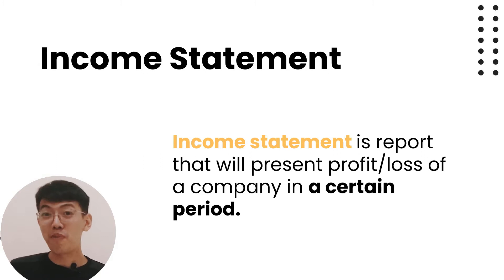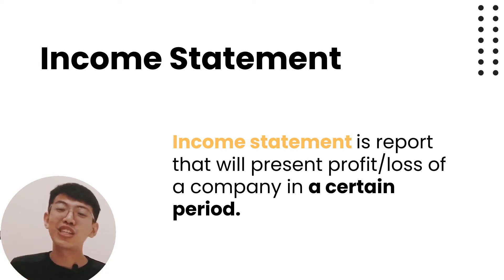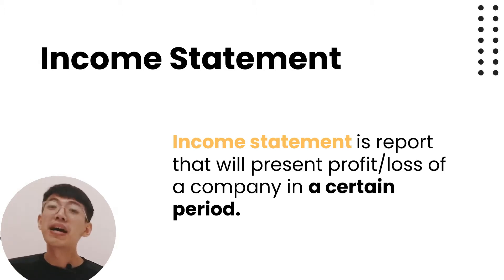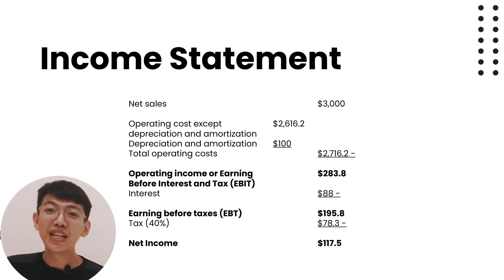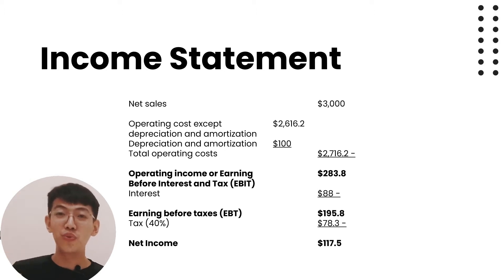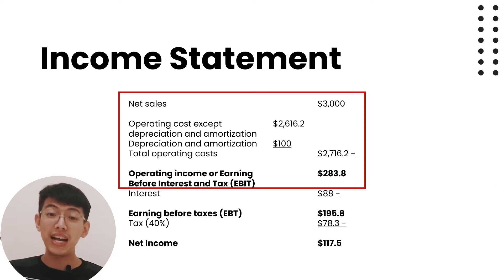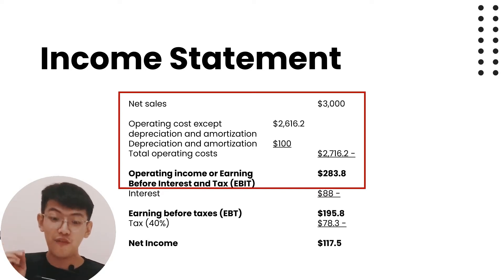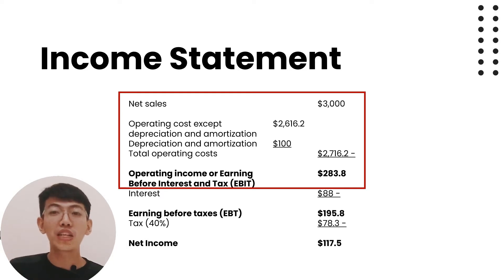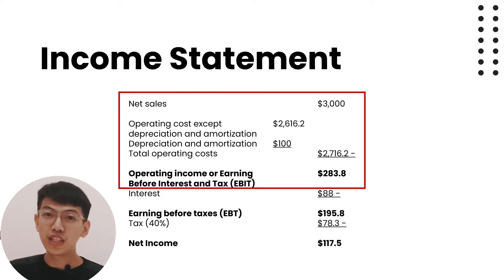Talking about profit is always interesting, right? So let's take a look at the example of an income statement. Basically, an income statement is just total revenue minus total cost. In this income statement, we can find operating income, which comes from sales or revenue minus operating cost including depreciation.